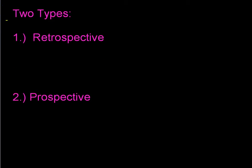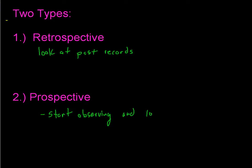There are two types of observational studies: retrospective and prospective. In a retrospective study, we look at past records. For example, if you want to find out voting trends for a particular town, you go back and look at past votes in that town. Maybe if you're interested in someone's behavior, you go back and look at their past records. Prospective is the opposite — you start observing now and look ahead into the future.